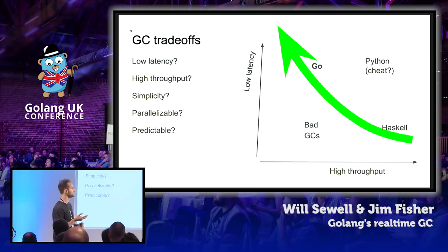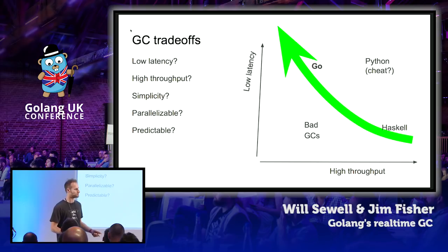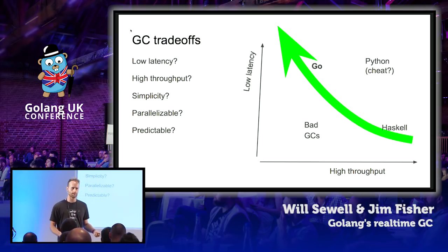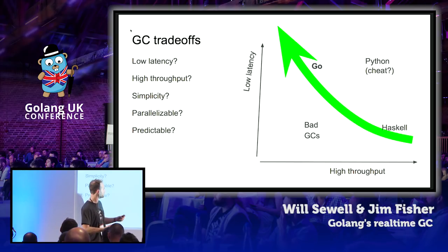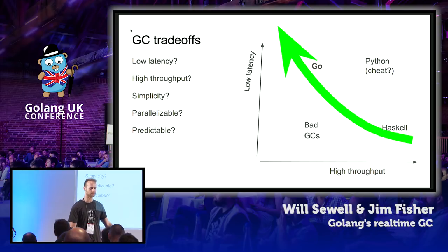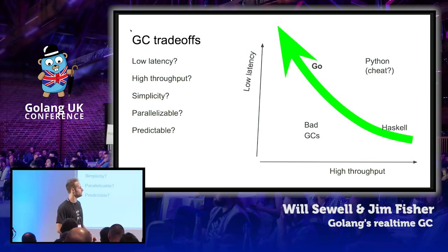The most important trade-off that we had at Pusher was between low latency and high throughput. In our message bus, low latency is roughly the amount of time it takes us to send a message, and high throughput means something like messages per second. Garbage collectors trade off one against the other. Ideal garbage collectors sit on this green line, making some compromise between the two.